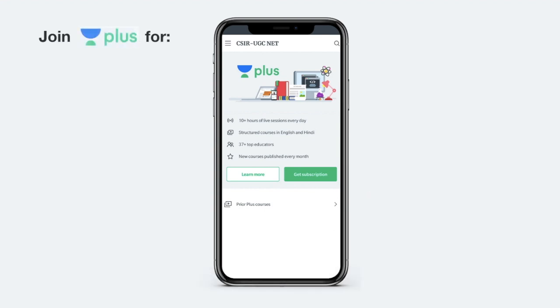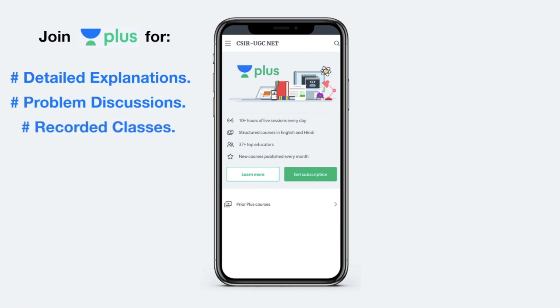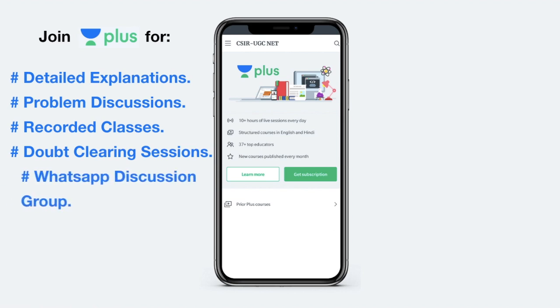Now Unacademy Plus offers some interesting features apart from live classes which include detailed and complete explanation of a particular course. Then there you have problem discussion for self-evaluation. You can also watch recorded version of the class in case if you miss out any live session. You have regular doubt clearing sessions for doubt clearing and to clarify all your problems. You also get access to the whatsapp group to clear and discuss problems among the other plus students.